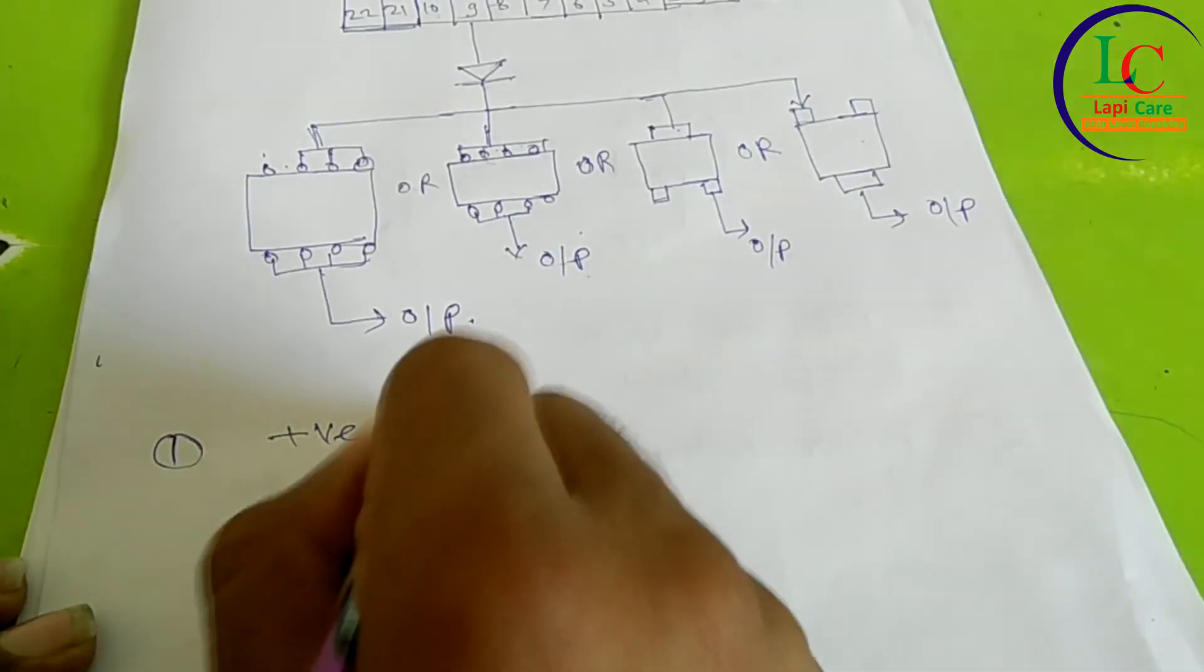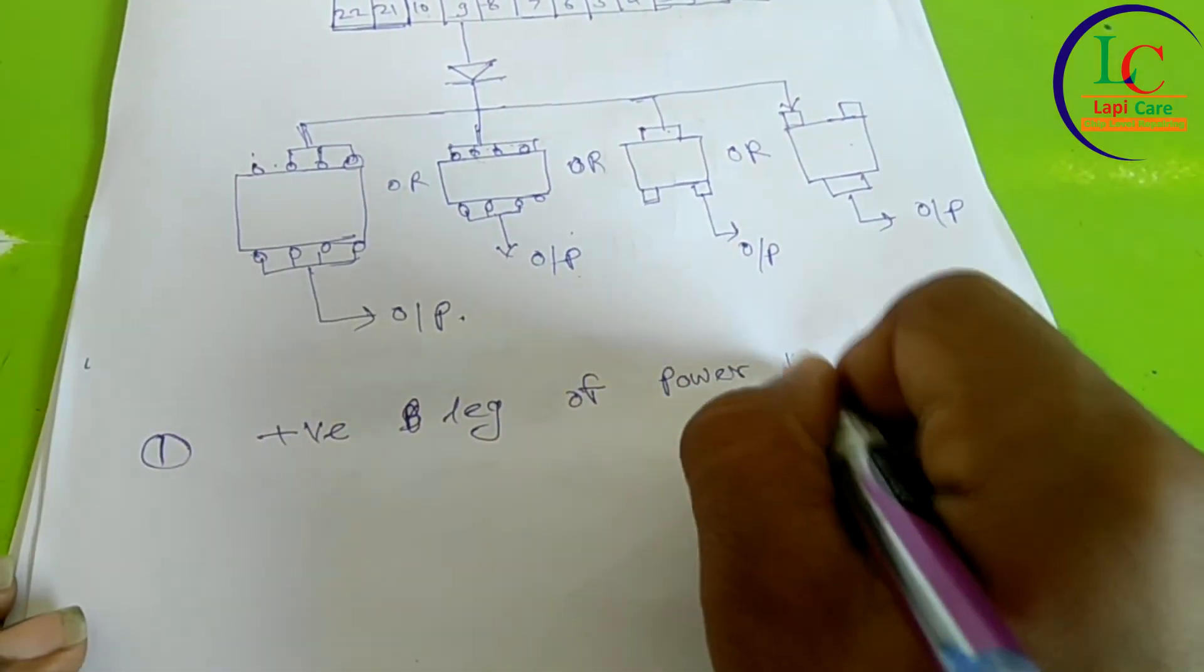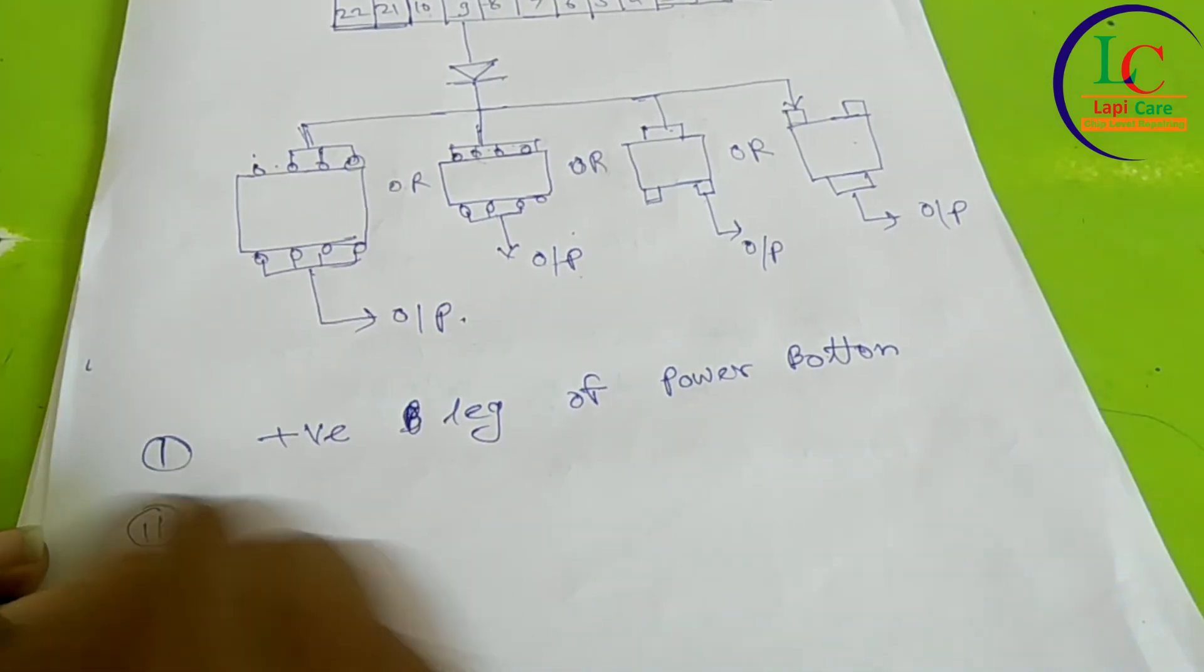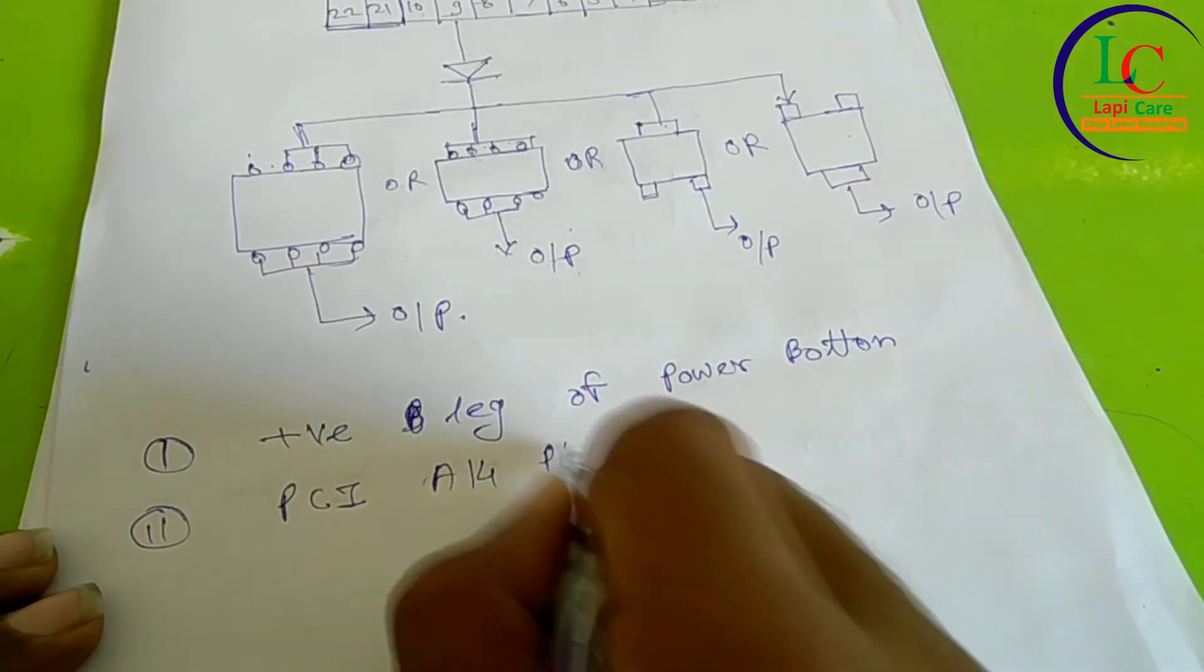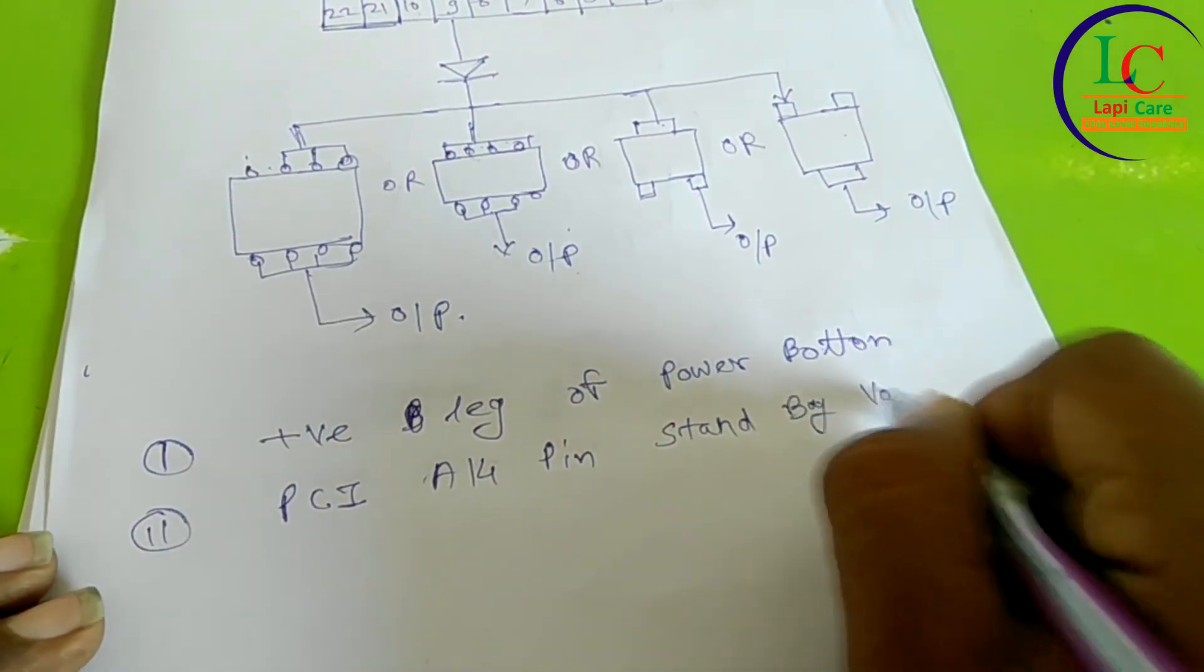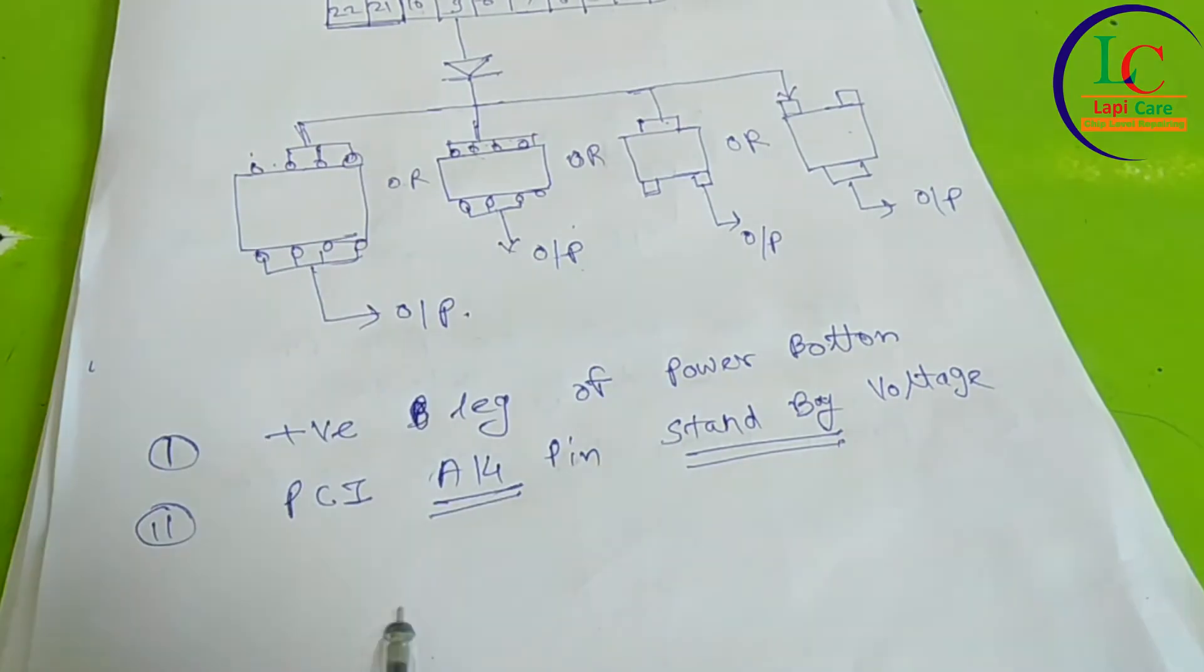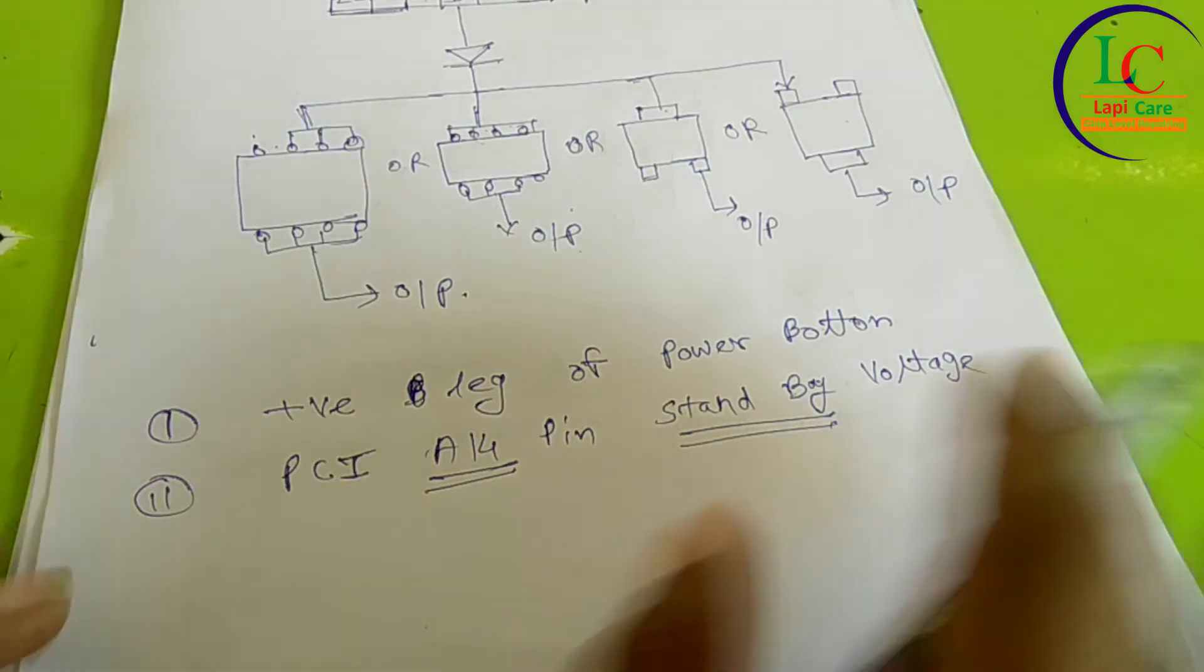Positive leg of power button where the supply or standby voltage is generated. Another PCI slot A14 pin number, there is standby voltage. Pin number 14 where the standby voltage comes. So these are the two test points to check if standby voltage is generated or not.